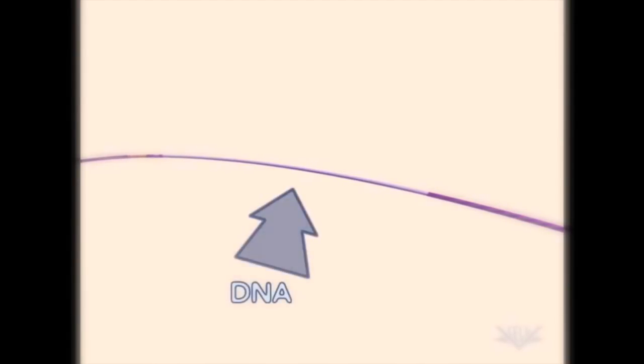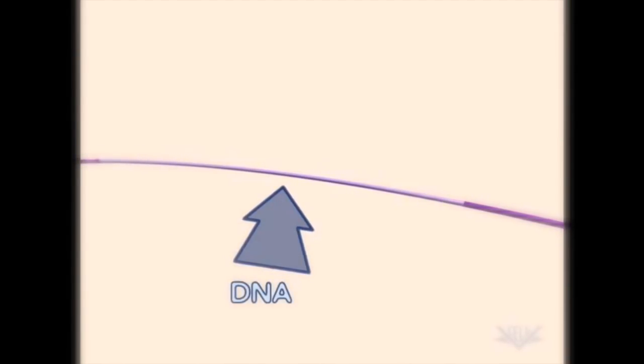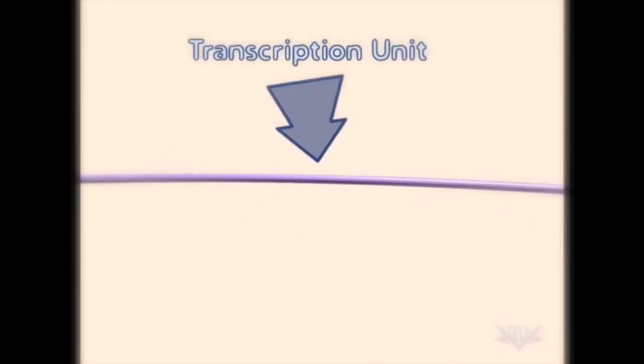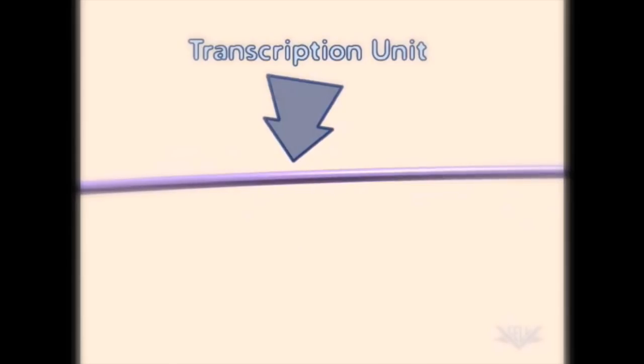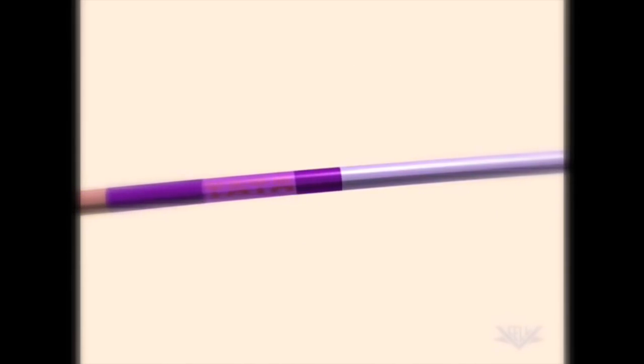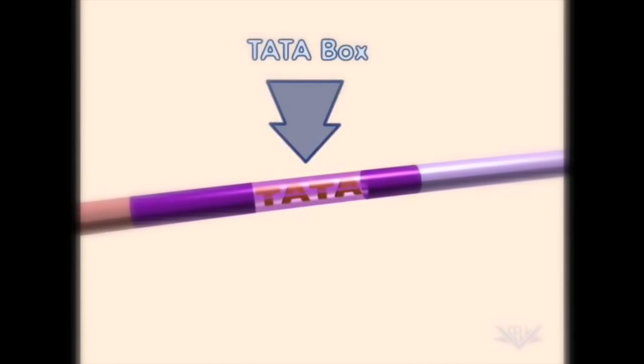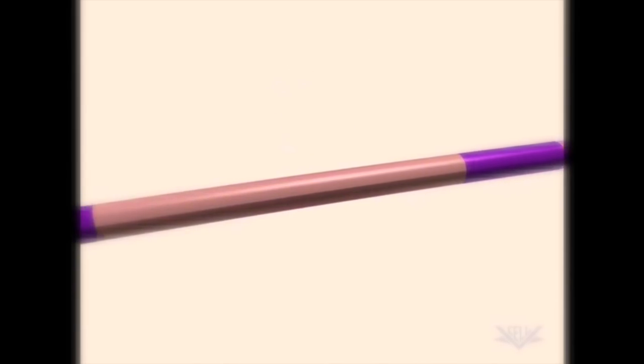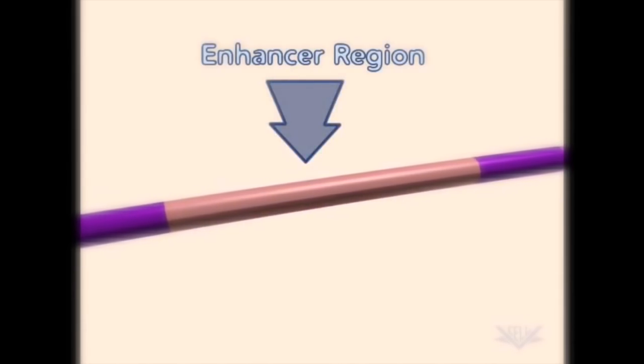Transcription begins with a strand of DNA. It is divided into several important regions. The largest of these is the transcription unit. This portion of the DNA will be used to produce RNA. Upstream of the transcription unit is the TATA box. An enhancer region may also be involved.